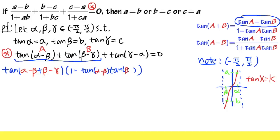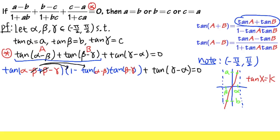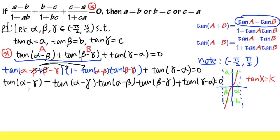Applying the formula, we get tangent of (alpha minus beta + beta minus gamma) times the factor (1 minus tangent(alpha minus beta) times tangent(beta minus gamma)), plus tangent(gamma minus alpha), all equal to zero. Notice that minus beta plus beta cancels, which is very nice. When we multiply through, many things multiply together, and having the right-hand side equal to zero is exactly what we want.